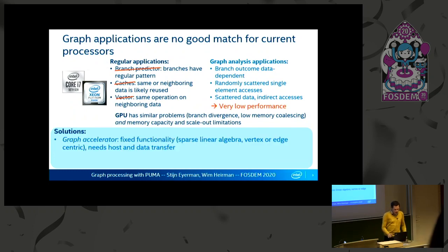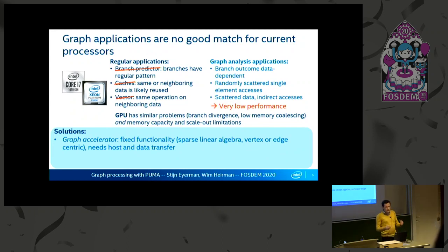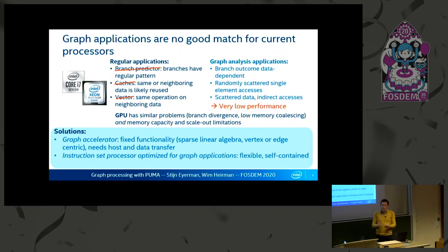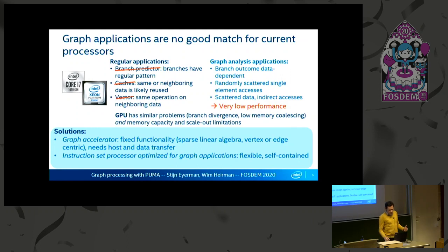So what are potential solutions? There have been proposals of graph accelerators — specific chips made for graph applications — that implement, for example, sparse linear algebra algorithms or vertex-centric algorithms. The problem is that you're fixed with that functionality, and you also need a host CPU and data transfer between both. Another solution is a general instruction set processor, like normal CPUs but optimized for graph applications, which is more flexible, self-contained, and doesn't need a host per se. That's actually our approach in PUMA.